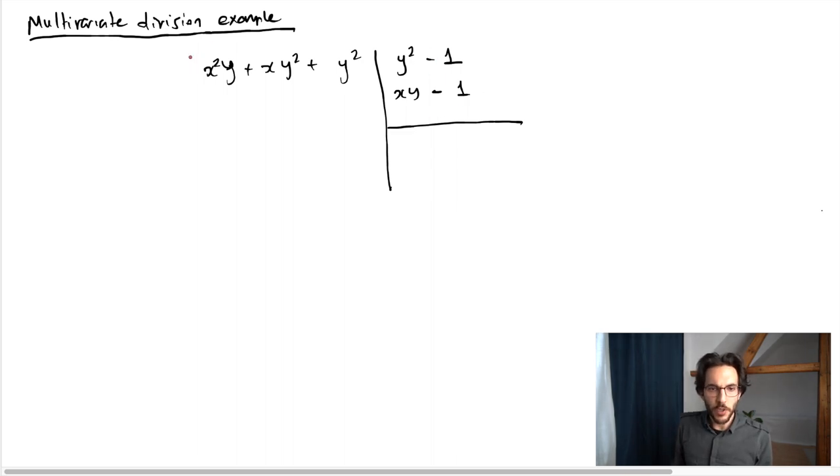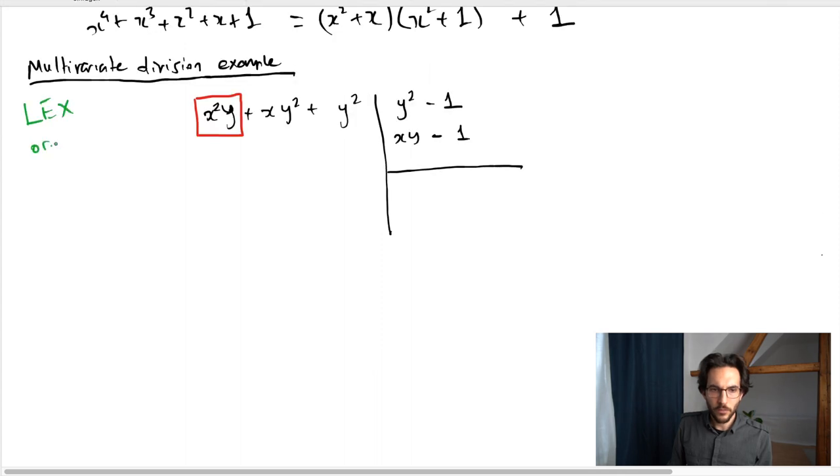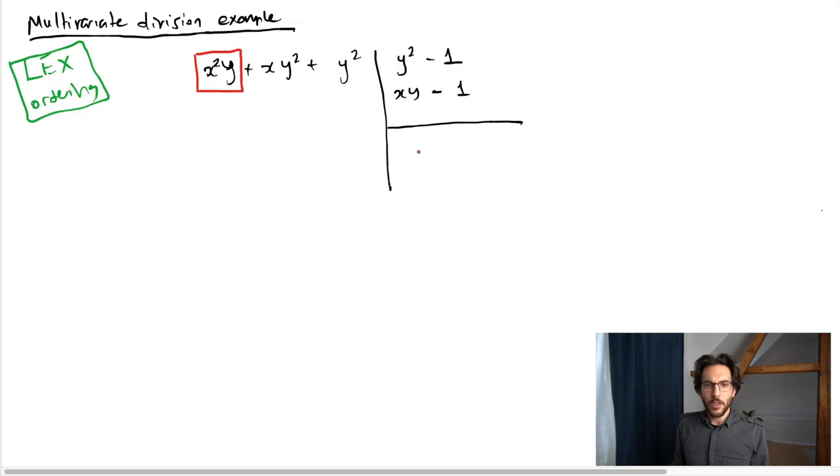The y squared minus 1 will be my preferred reduction operation, and then I will reduce by x y minus 1 when it's not possible to reduce by y squared minus 1. We take x squared y, and here I'm using the lexicographic ordering to order the monomials. With lex ordering, the leading coefficient is x squared y. The leading coefficient here is y squared, but y squared does not divide x squared y. Therefore, I say that there is no quotient here. The first thing I write is 0. I now move on to the second polynomial, x y minus 1, and x y does divide x squared y.